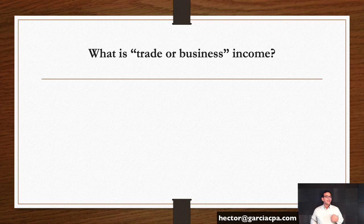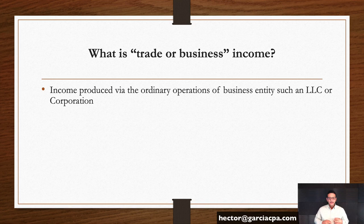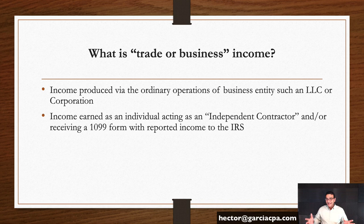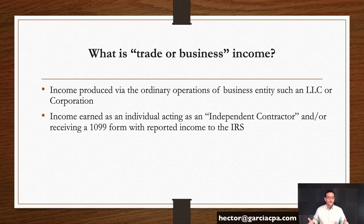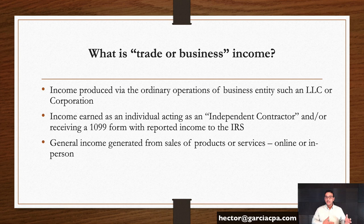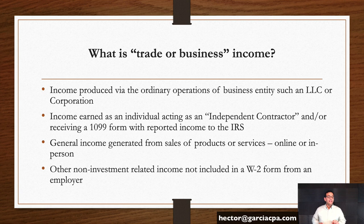So let's start with what is trade or business income. This could be income produced via the ordinary operation of a legal entity, like an LLC or a corporation. But it could also be income earned by an individual acting as an independent contractor — paid via a business, maybe reported on a 1099 form. In many cases you don't even get that income reported, especially if you run your own sole proprietorship. You can also generate income from sales of products or services, maybe online or in person — generally any non-investment income that you're not already getting in a W-2 from your employer.